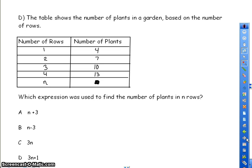And my last one. It says the table shows the number of plants in a garden based on the number of rows. Which expression was used to find the number of plants in n rows? So you're trying to figure out what am I doing to the 1 to get 4. Because they give me my answers, I can plug them in. So 1 plus 3 is 4. That one works. 1 minus 3 is not 4. That does not work. 1 times 3 is 3. Not 4. That one won't work. 3 times 1 is 3. Plus 1 is 4. So that one works. So I need to decide between these two. So I'm going to go to 2.